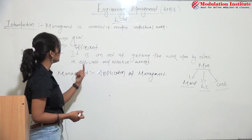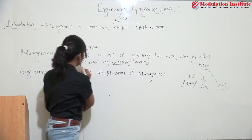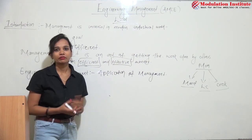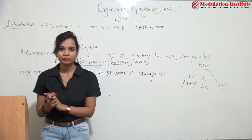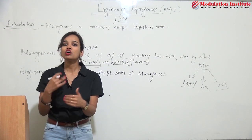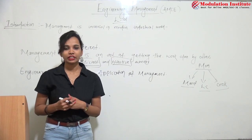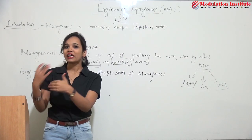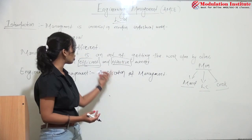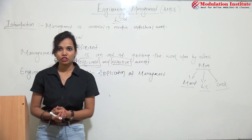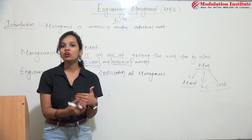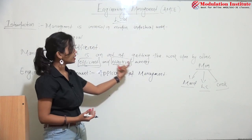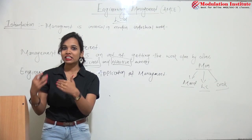Let us understand the two key words that appear repeatedly: efficient and effective. Effective means the ability to perform work — how well you can perform the work. Efficient means doing work at minimum cost. If you are managing both at the same time — performing well and at minimum cost — then the result is called an efficient and effective result. To achieve both, we have to follow the management process.